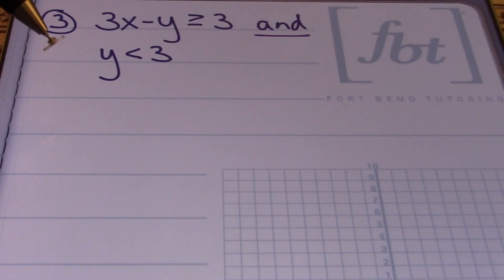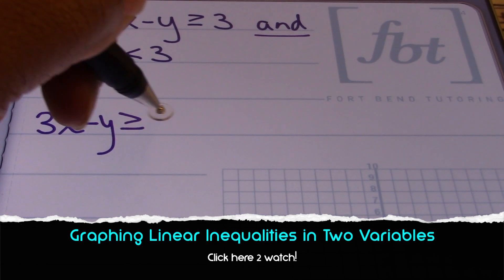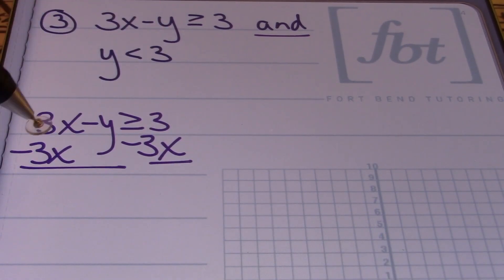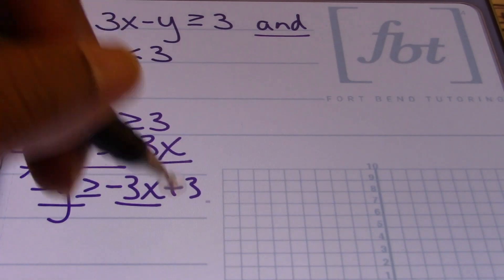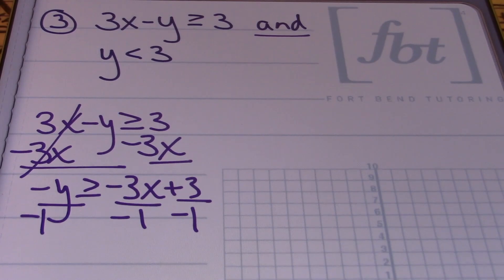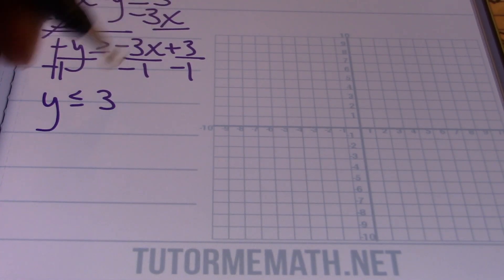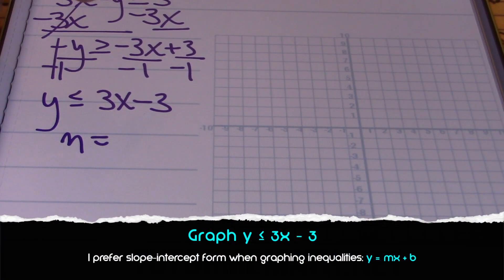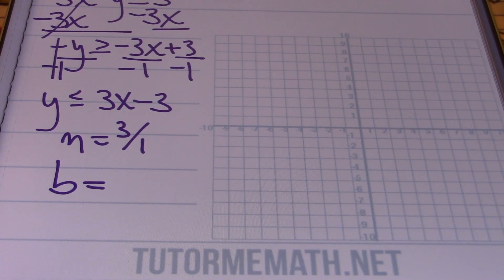Now let's look at number three. We have 3x minus y is greater than or equal to 3, and y is less than 3 — an intersection because it has the word 'and.' For the first inequality, I need to solve for y: 3x minus y is greater than or equal to 3. Subtracting 3x from both sides, then dividing each term by negative one — and changing the direction of the inequality symbol — gives y is less than or equal to 3x minus 3. So the slope is 3 (written as 3 over 1) and the y-intercept is negative 3.